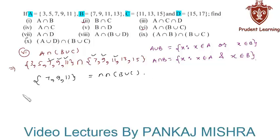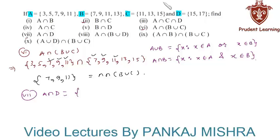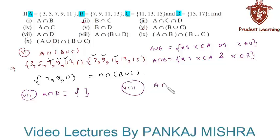Next we have A intersection D, which simply means the set of all elements common to both set A and set D. Here we can see that no element is common to set A and set D, so their intersection is an empty set.